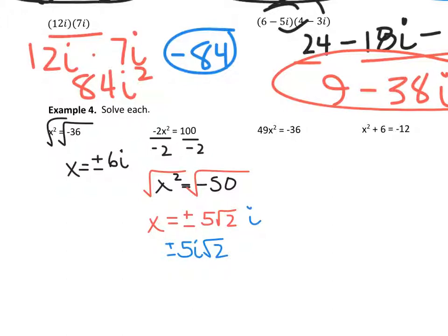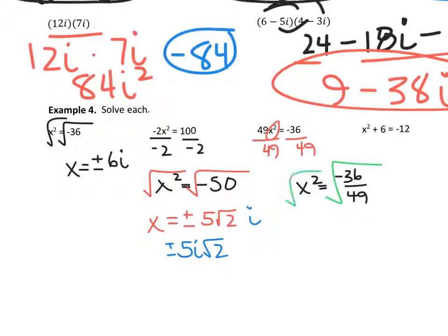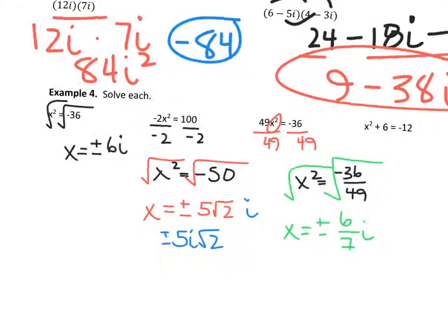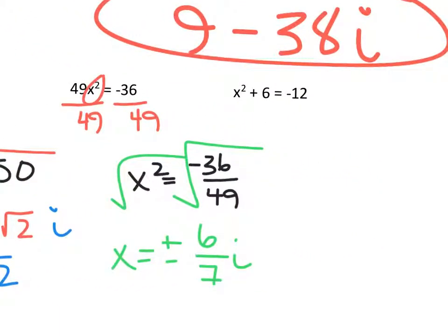For the third one, isolate x squared by dividing both sides by 49. I get x squared equals negative 36 over 49. Taking the square root: x equals plus or minus — you can break up the fraction under the square root — so it's the square root of negative 36 over the square root of 49. That gives plus or minus 6 sevenths i, because the square root of 36 is 6 and the square root of 49 is 7, with an i because we have the square root of a negative number.